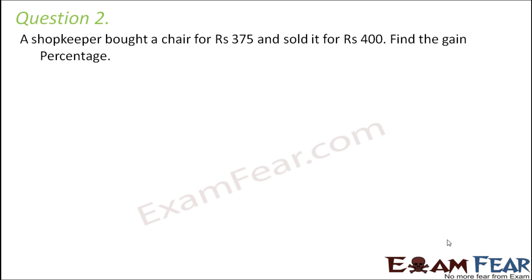Question number 2. A shopkeeper bought a chair for Rs 375. The shopkeeper bought it for this much amount. That means this is the cost price. So the cost price is Rs 375. And sold it for Rs 400. So the selling price is Rs 400. Find the gain percentage.